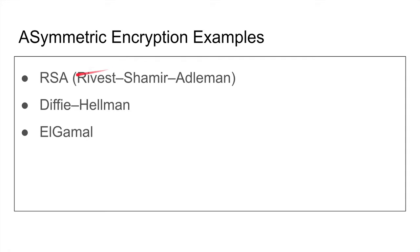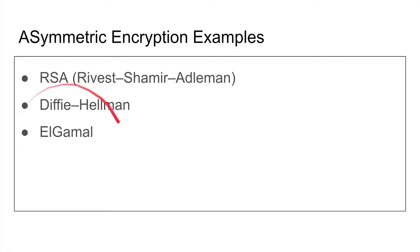The three inventors are Rivest, Shamir, and Adleman — that's the RSA algorithm. RSA is used in SSH, TLS, and many other protocols. Diffie-Hellman is another asymmetric algorithm, and ECDH is an implementation of Diffie-Hellman.